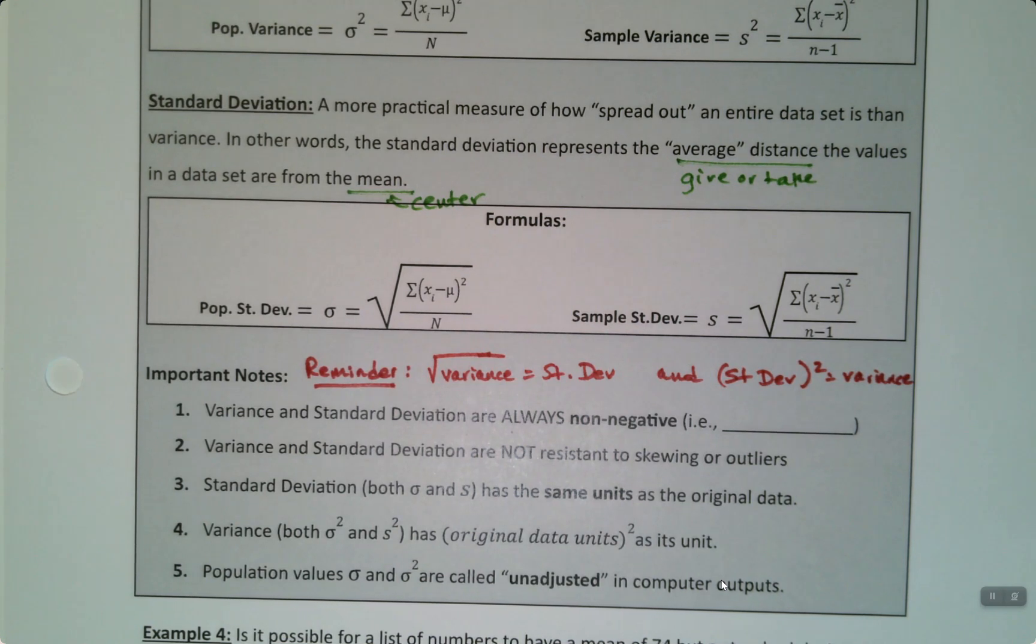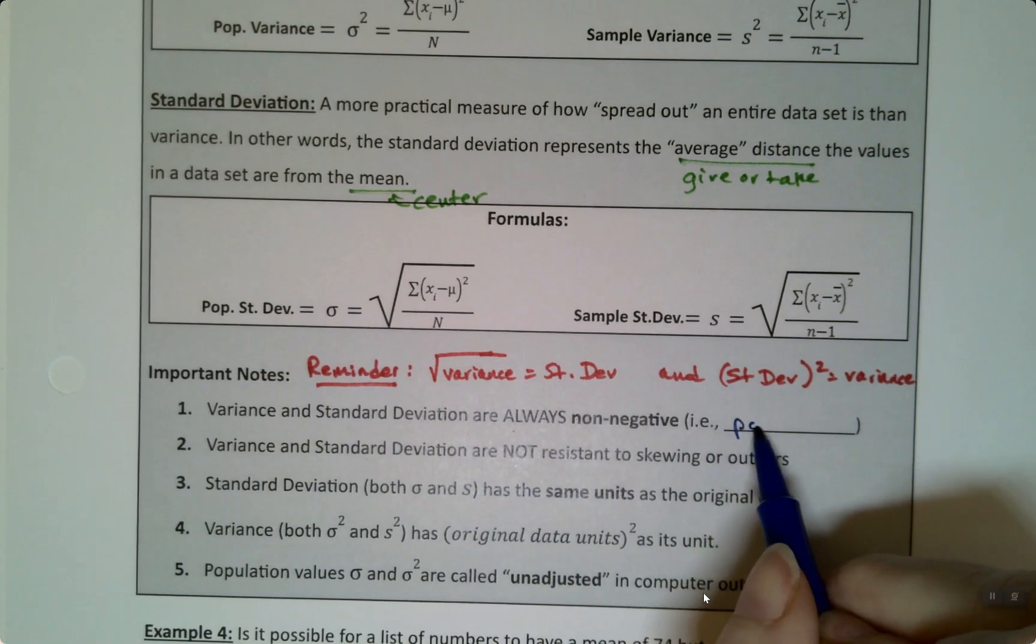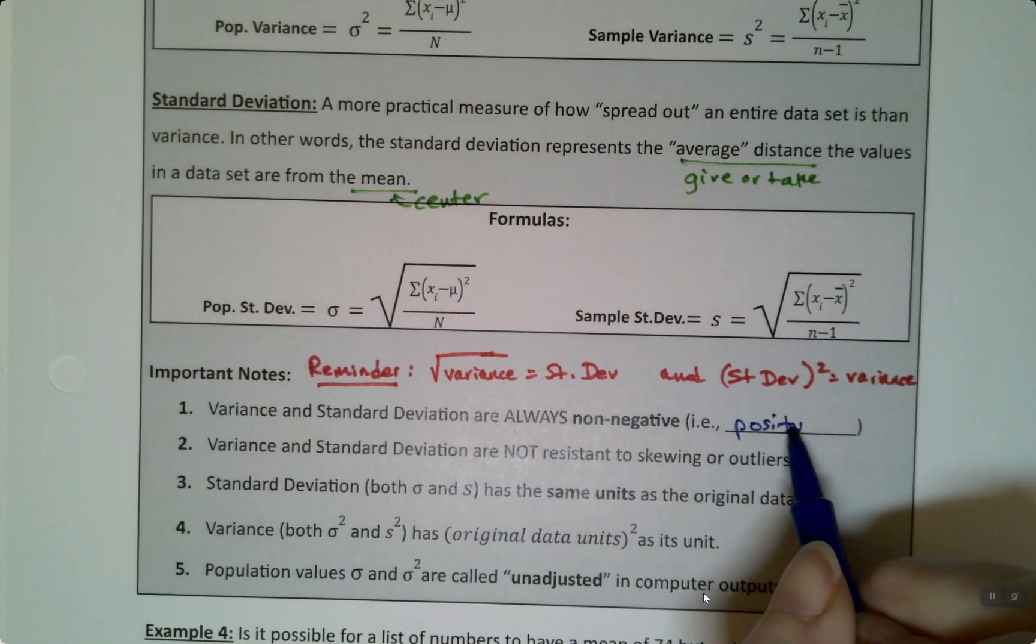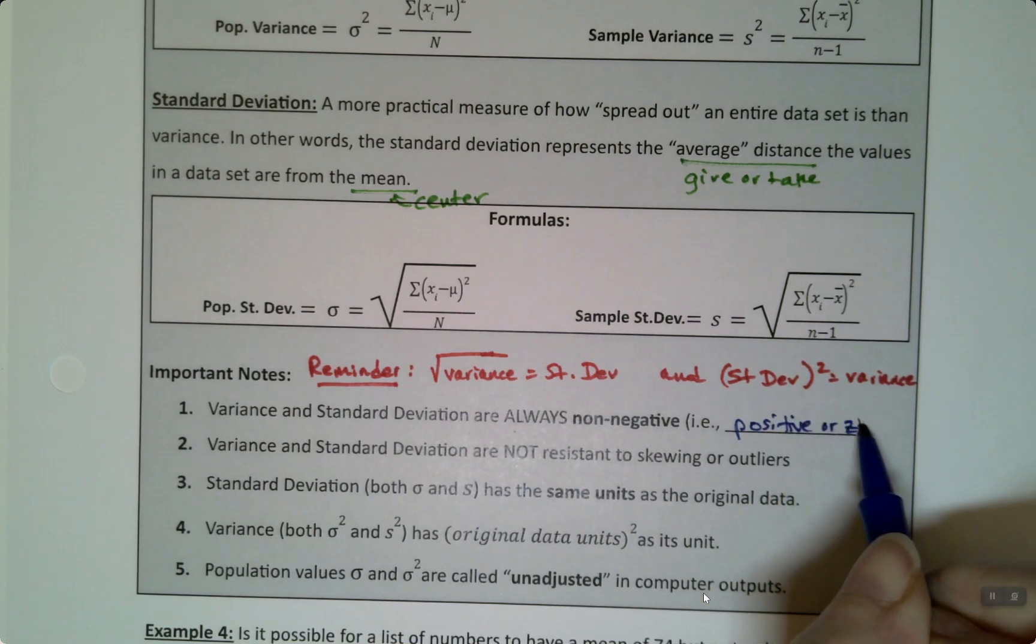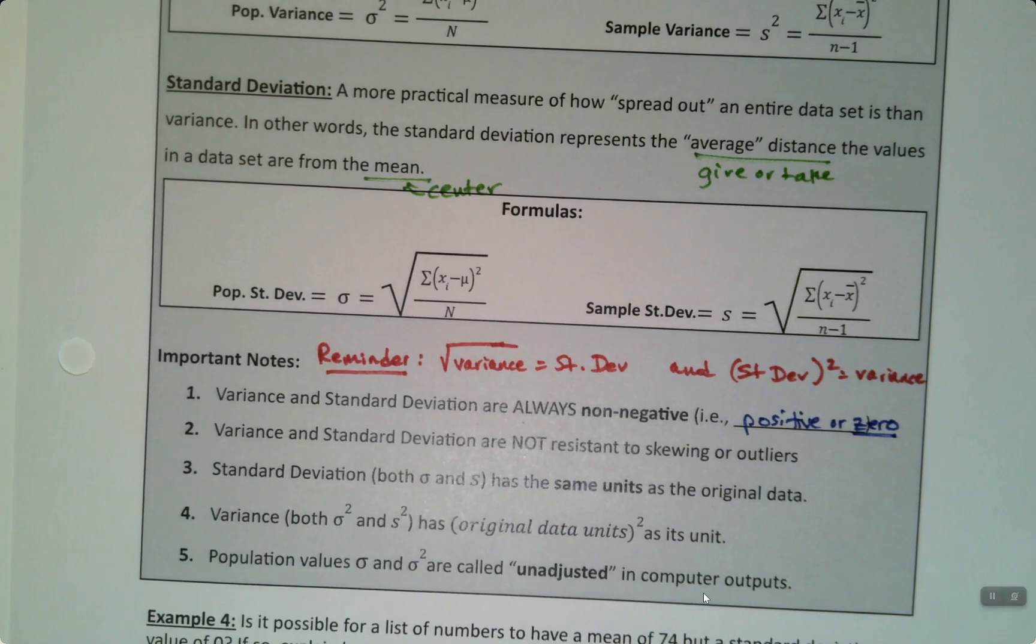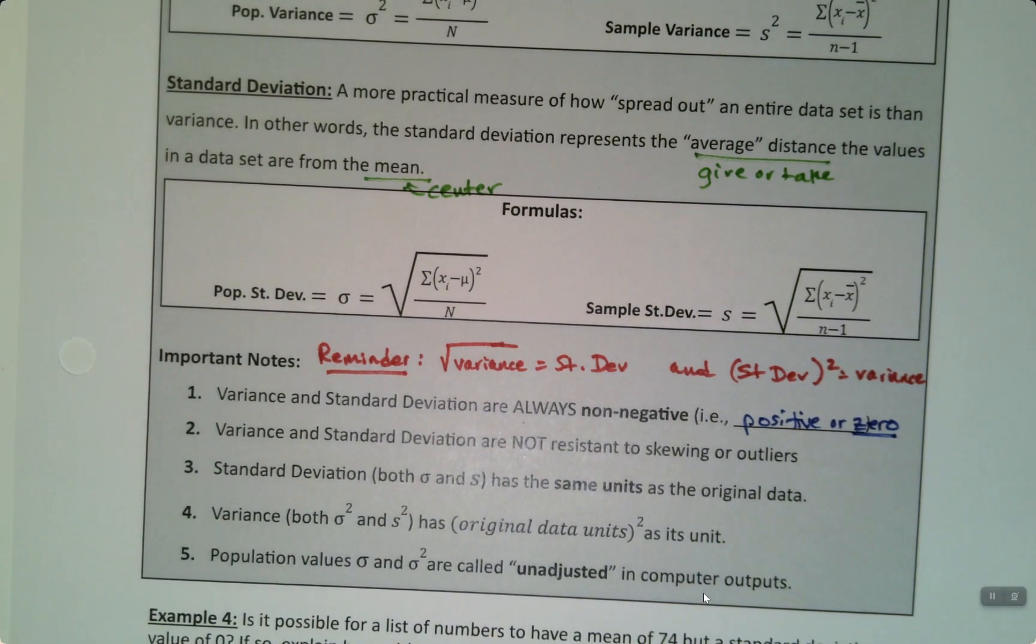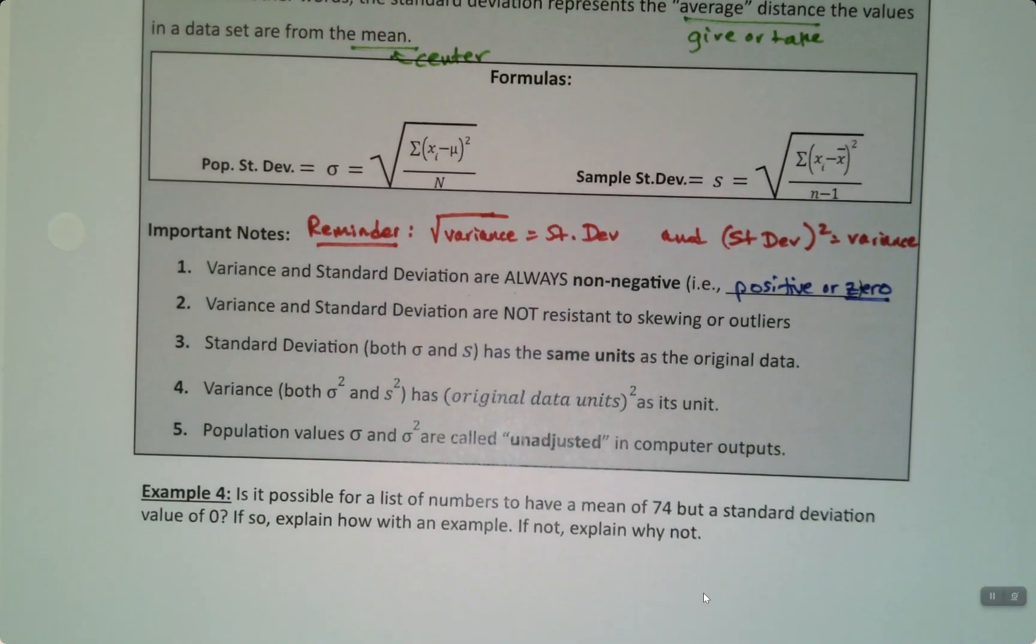The variance and standard deviation are always non-negative. Always. In other words, they're positive or zero. That's the best you can have. Which should have you wondering, wait, zero? Is that possible? And the answer is, sure, of course you can have zero.